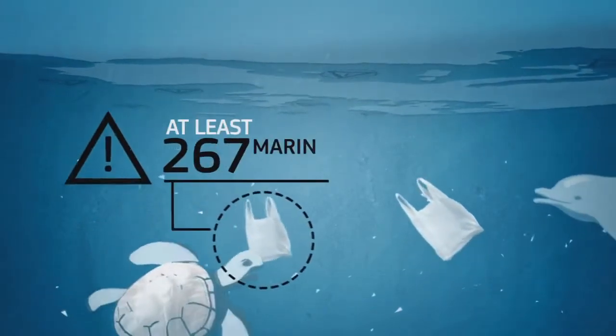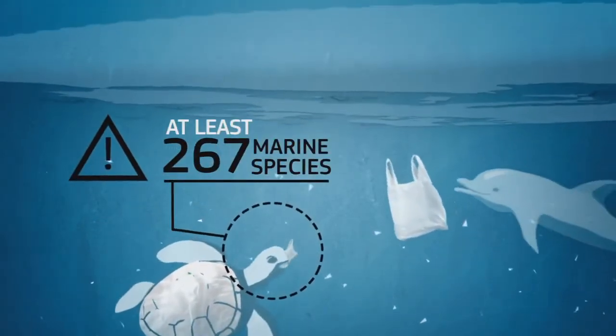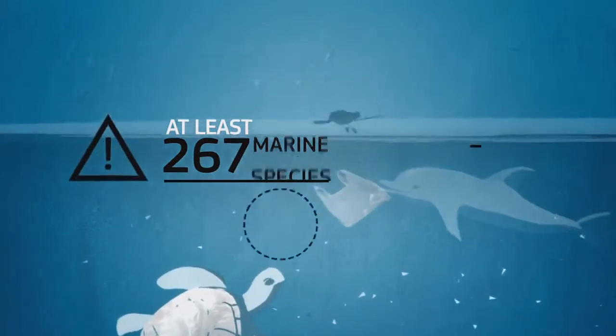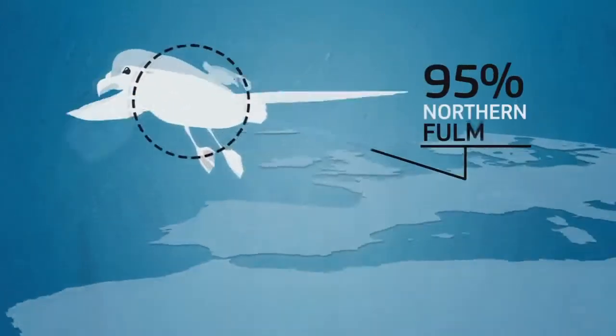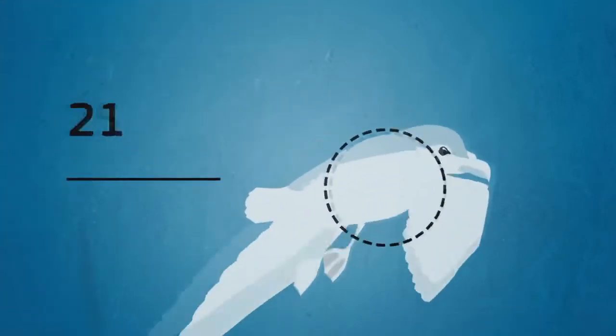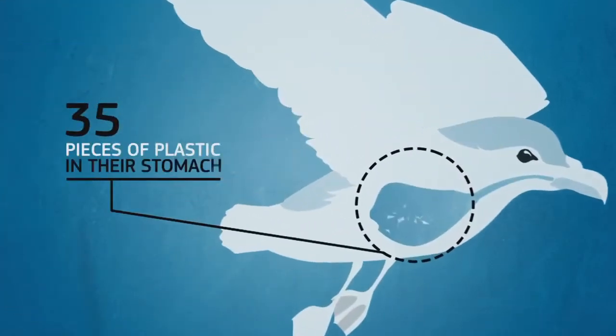At least 267 marine species are known to get entangled in plastic debris or to ingest it. 95% of northern fulmars found on beaches in the northeast Atlantic have 35 pieces of plastic in their stomach.